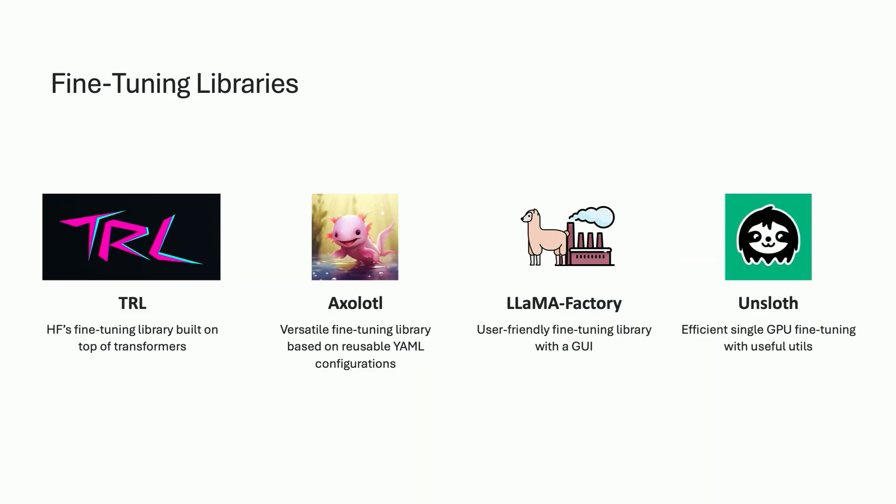In terms of fine-tuning libraries — I think that you know about Unsloth now, but I'm going to talk about the other ones. TRL from Hugging Face is a great library, built on top of Transformers, very easy to use. You have Axolotl, an excellent and very versatile library with a lot of YAML config files. And then you have LLM Factory, which has a really good graphical user interface built in.